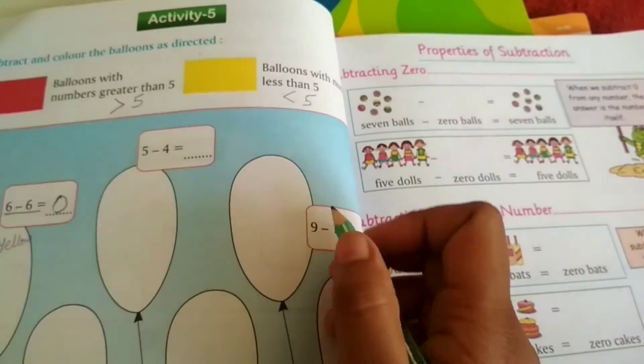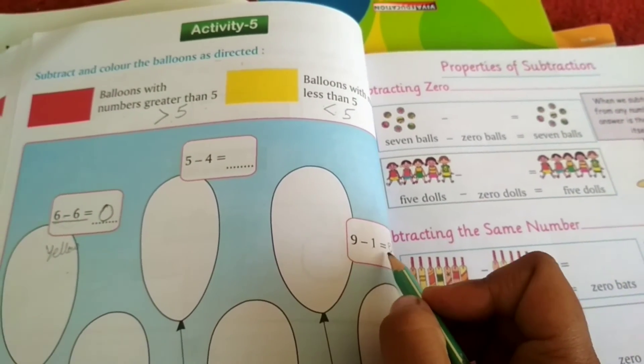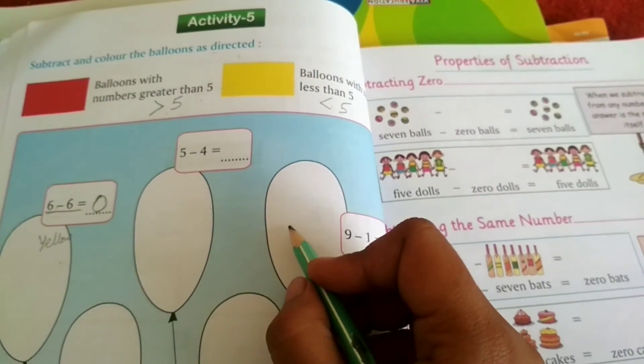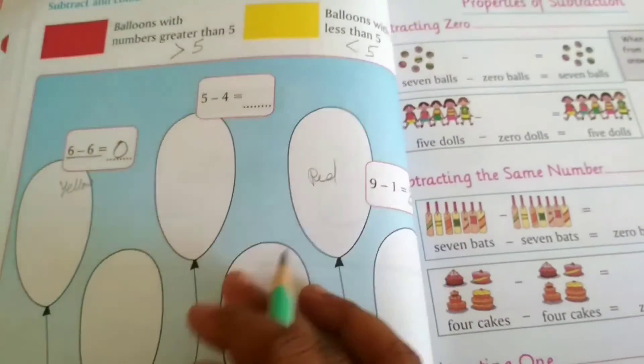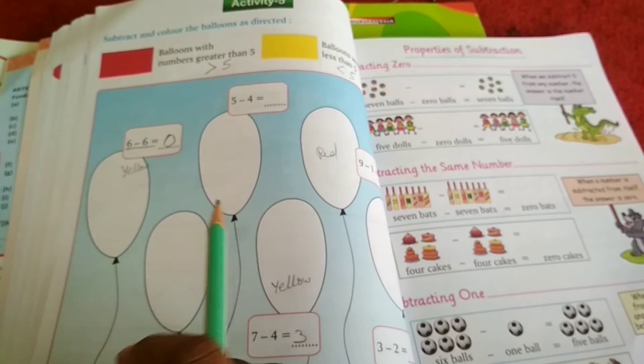One more. 9 minus 1 is 8. 8 is greater than 5, right? So this one is red color. Rest you will do by yourself and color it also, okay?